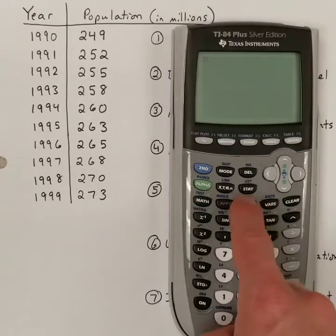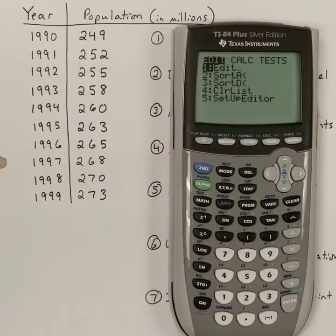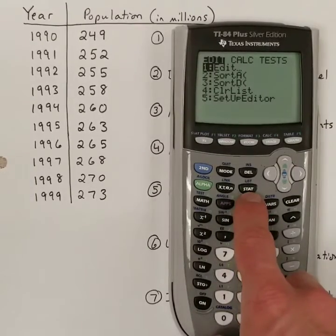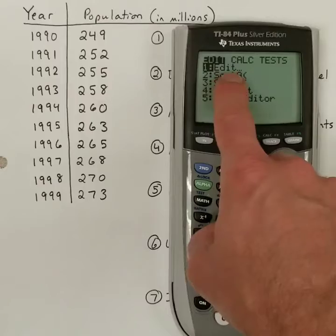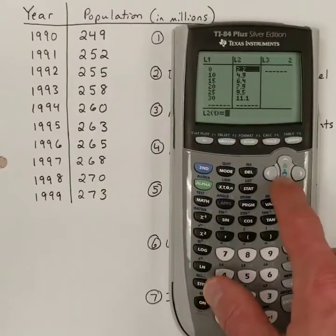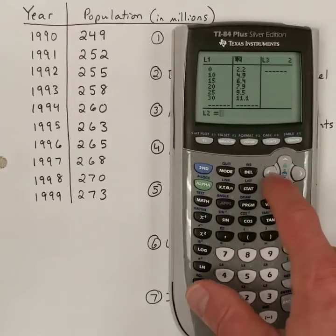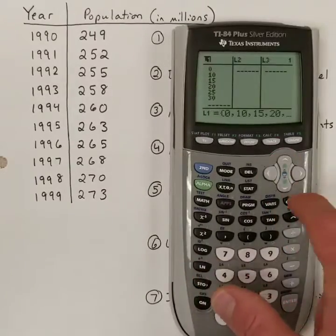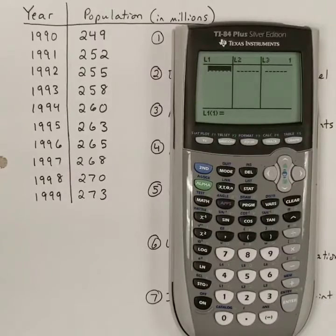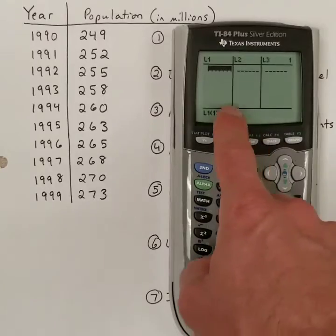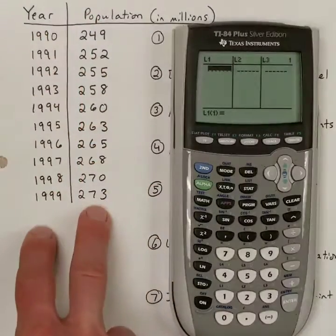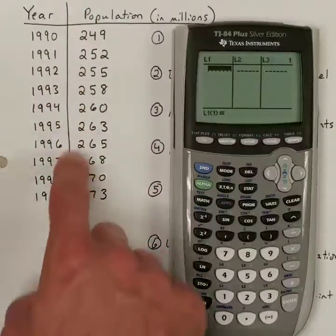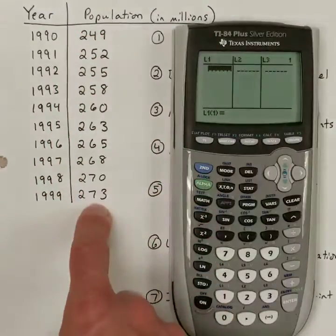Actually, what I wanted to do is to hit the stat button. So I hit stat. This is useful for a lot of statistical applications. But the main thing we're going to do here is we're going to edit. And that's, oh, I got some data in here. I don't want you to, well, it doesn't matter if you see it or not, but it's not useful for this problem.